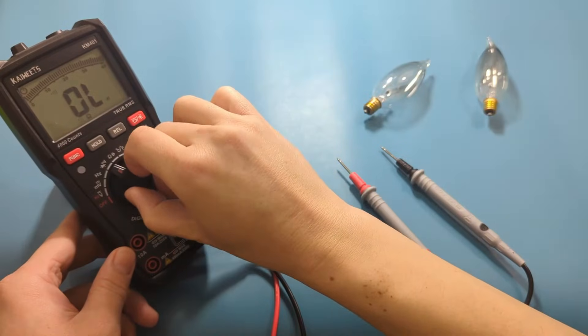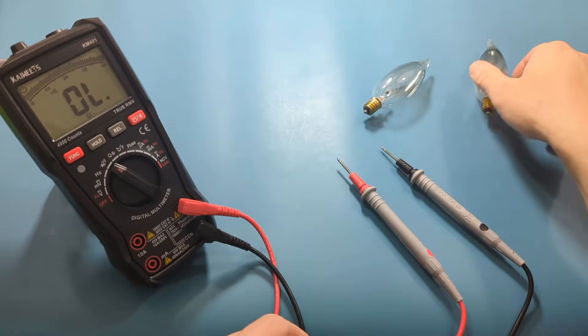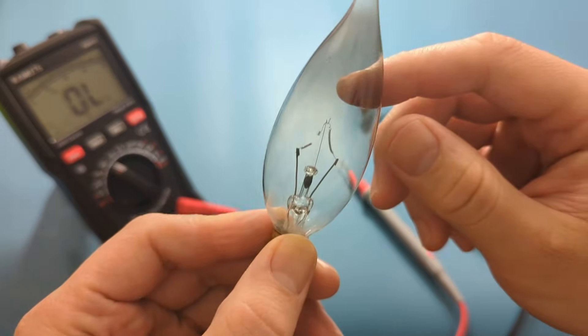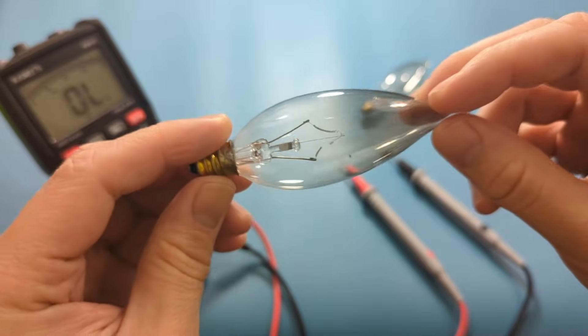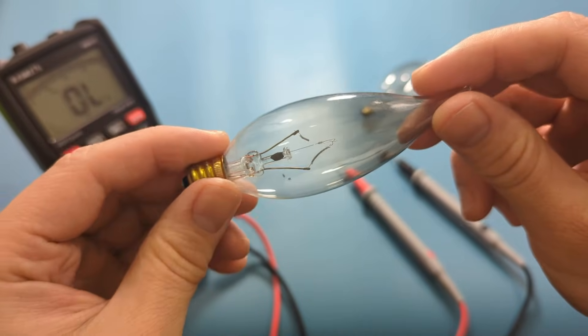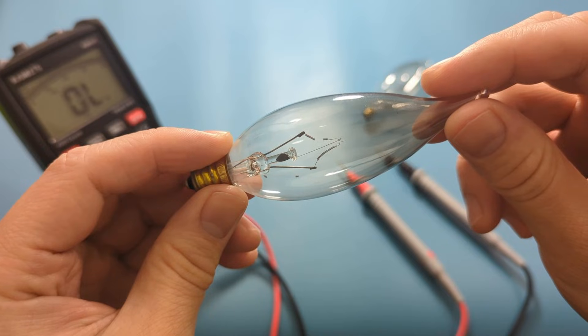Let's test the continuity of another light bulb. When we check the filament on this light bulb, it seems to be broken. There is a small piece loose inside the bulb. It doesn't look promising.